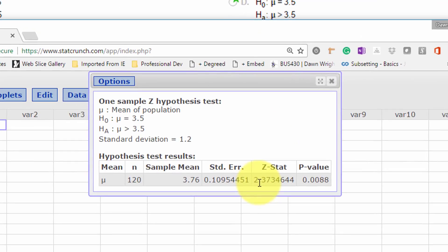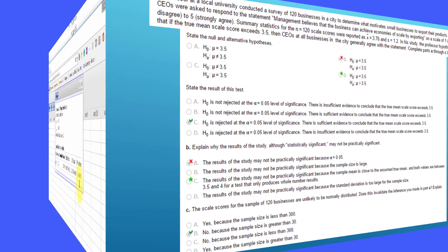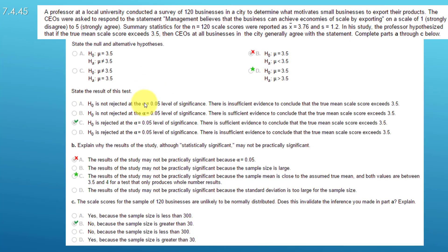We have a Z statistic, our test statistic, of 2.37, which I recall was the answer they asked for. And we've got a p-value of 0.0088, which rounds to 0.009. To finish up on the problem, we have a p-value of 0.009, which is less than the significance level alpha of 0.05. Therefore, we reject the null and support the alternative. There is sufficient evidence to conclude the true mean exceeds 3.5, which is our alternative.